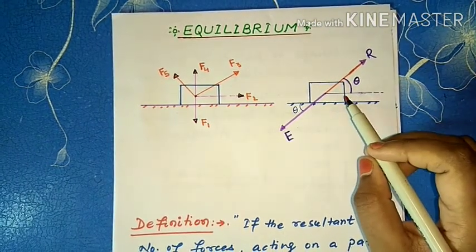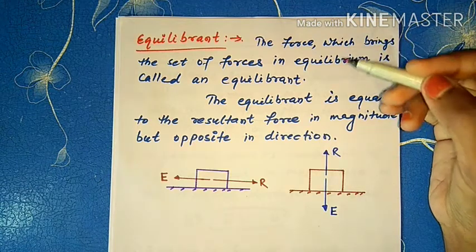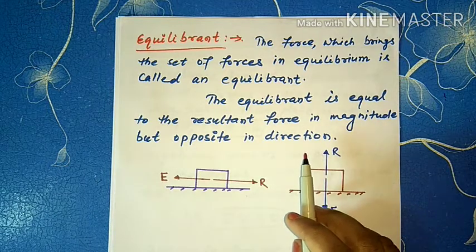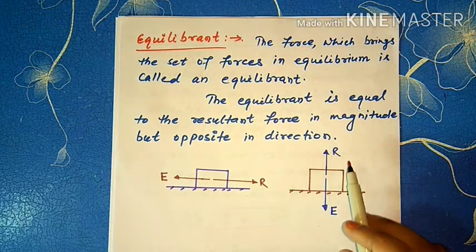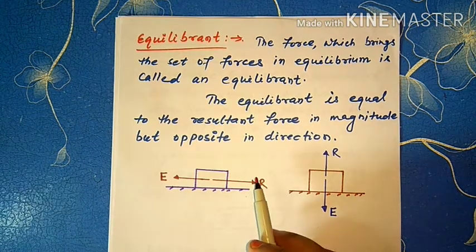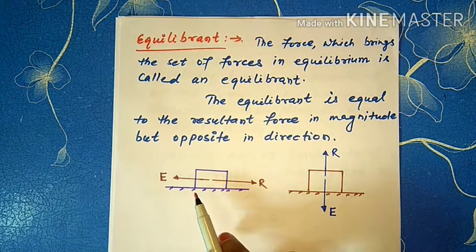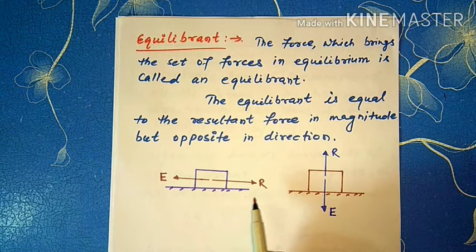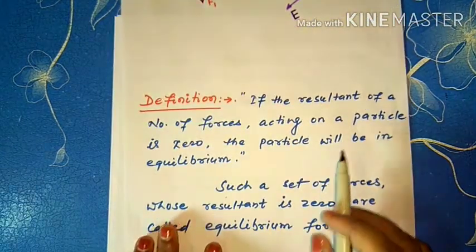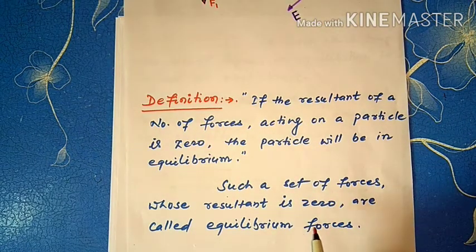The force which brings the set of forces into equilibrium is called the equilibrant — वह बल जो set of forces को equilibrium में ले आता है उसे equilibrant कहा जाता है। Now, the equilibrant is equal to the resultant force in magnitude but opposite in direction. If the resultant is acting vertically upwards then the equilibrant acts vertically downwards, and if the resultant acts towards the right then the equilibrant acts towards the left. Since they have the same magnitude they cancel each other, hence the particle will be in equilibrium.